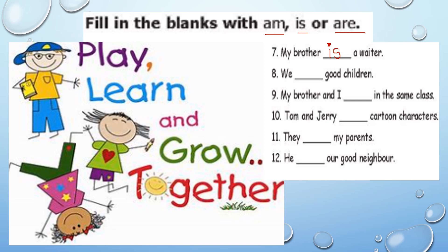Moving to the next question: 'We ___ good children.' They are the little children, right? One child, many children. 'We' with children means it's plural, so 'am' and 'is' will not come — 'are' will come. So: 'We are good children.'